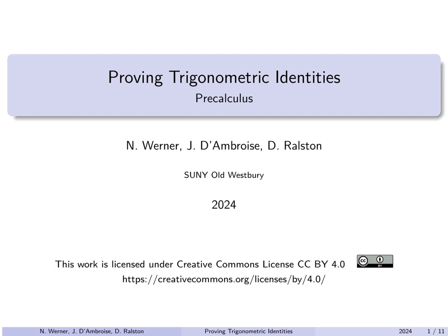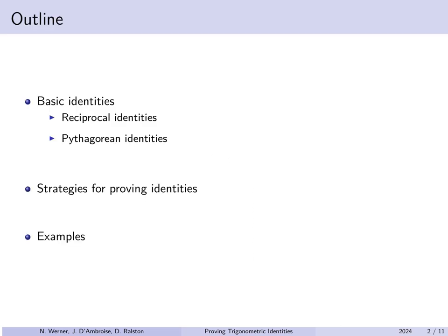In this lecture we'll go over how to prove trigonometric identities. We begin with basic identities — reciprocal and Pythagorean identities — that we already know. Then we'll go over strategies for how one proves new trigonometric identities using these known ones, and work through several examples.